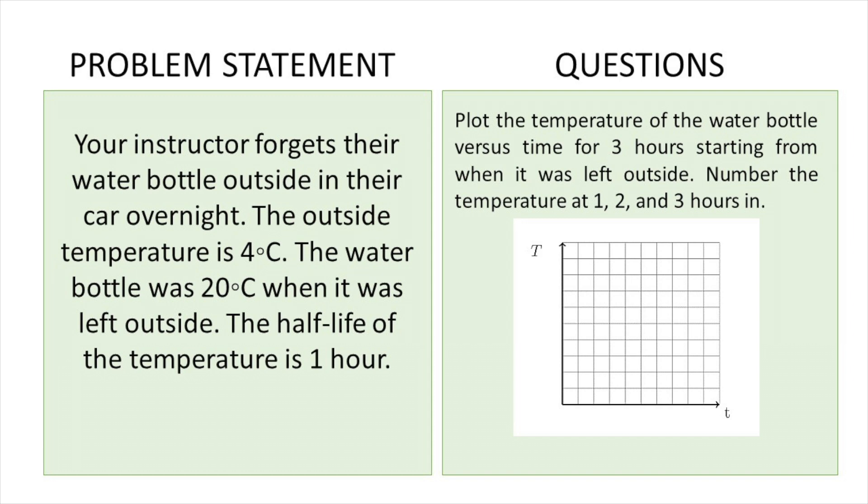So this is the problem that we're gonna be working with today. Your instructor forgets their water bottle outside in their car overnight. The outside temperature is 4°C. The water bottle was 20°C when it was left outside. The half-life of the temperature is one hour. And what we have to do is make a plot of the temperature of the water bottle versus time for three hours starting from when it was left outside.